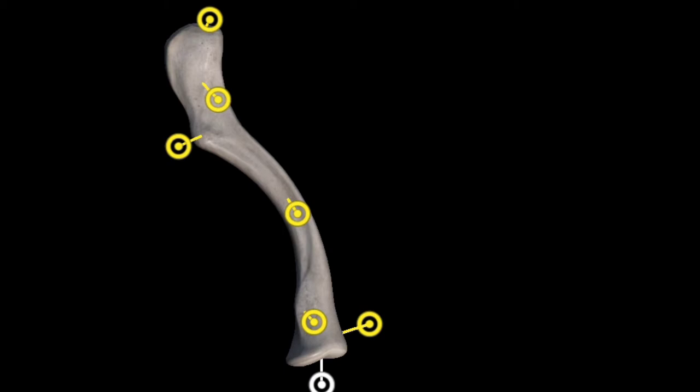The clavicle has three specific ossification centers: a primary center, another lateral center, and one secondary center which is present at the medial end — occurring by the meeting of the medial and lateral parts of the clavicle.